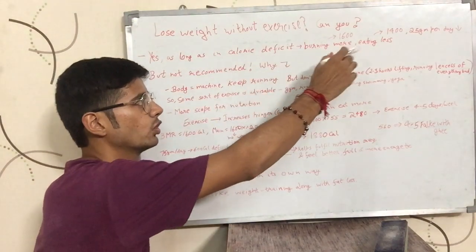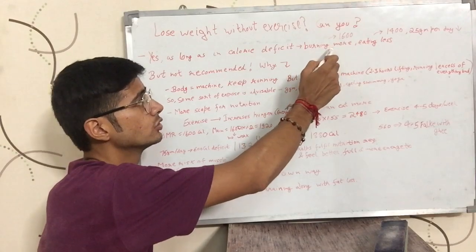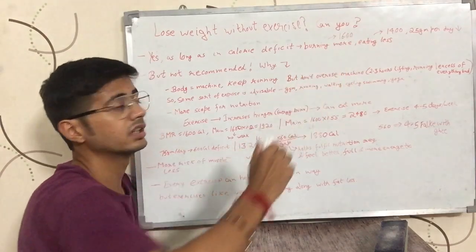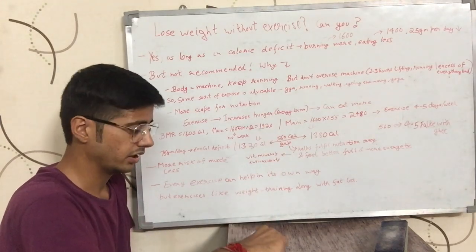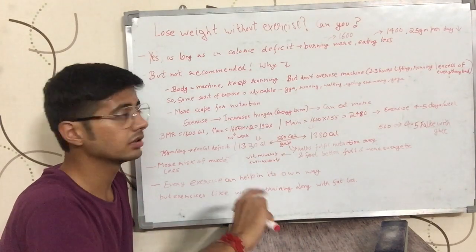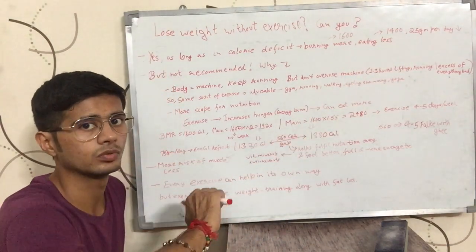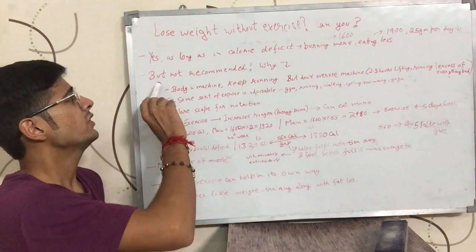So if you are in calorie deficit, you are going to lose weight. Basically, if you are burning more calories than you are eating, which is what calorie deficit is. Let's say you are burning 1600 calories and you are eating 1400 calories. You are in a deficit of 200 calories. 800 calories is around 100 grams. 200 calories is around 25 grams. So you are going to be losing around 25 grams of weight per day.